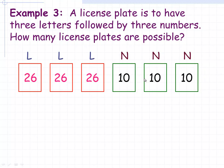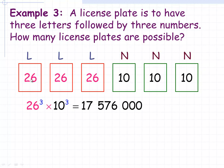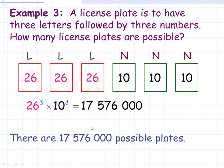There are ten different digits — zero to nine — for each of the number positions. For each of the 26 ways to select the first letter, there are 26 ways to select the second, and so on. So 26 times 26 times 26 is 26 cubed, times 10 times 10 times 10 which is 10 cubed. That gives 17,576,000 possible plates with no restrictions whatsoever.